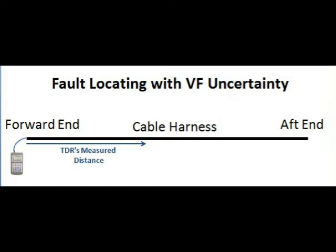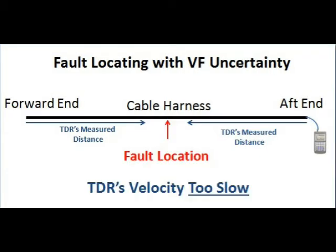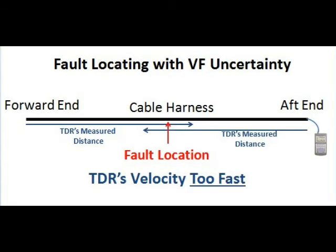If that method is not a good option, try Method 2. First, use the velocity in the cable list for the cable type selected. Take the TDR's distance to fault from one direction — say forward to aft — measure off the TDR's distance reading and mark the harness with tape. Then use the TDR to measure the same pair in the opposite direction and mark that distance off with tape. If the velocity set in the TDR is too slow, the mark distances will be short and the two tapes will not meet. If the TDR's velocity is too fast, the mark distances will be too long and the tapes will be crossed. In either case, the fault will be centered between them and you can now determine the correct velocity for that harness.